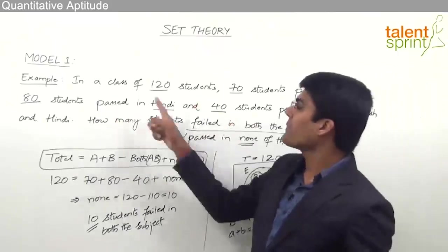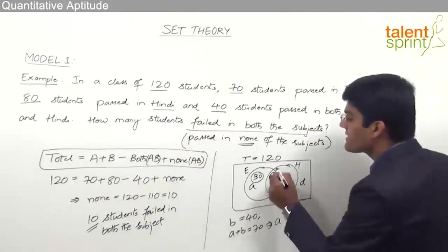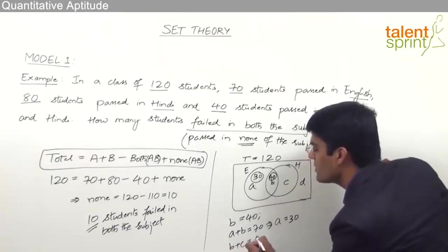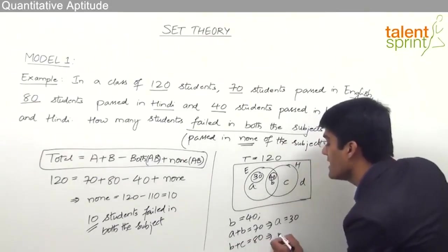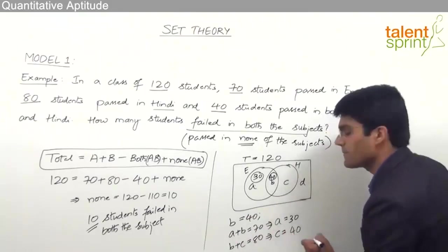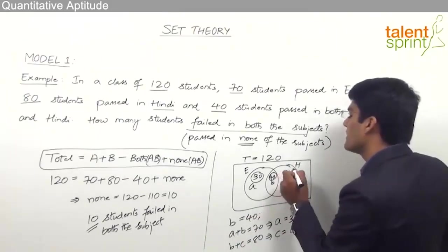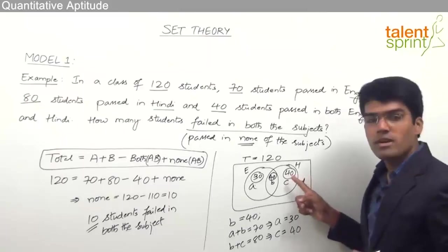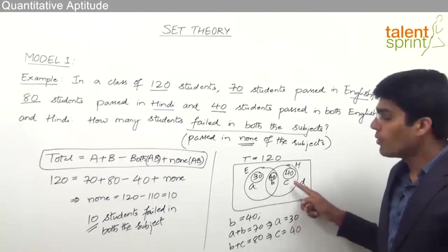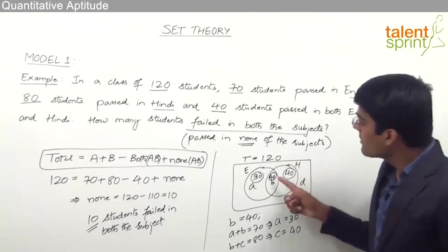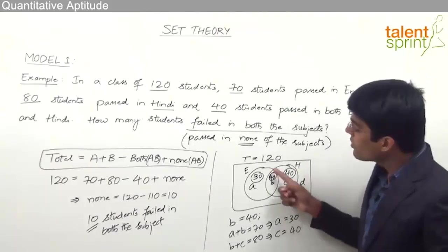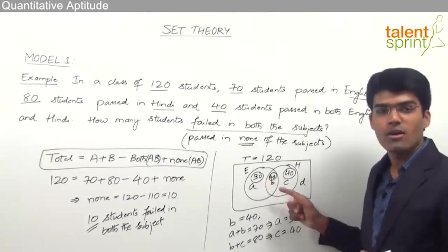Likewise, 80 students passed in Hindi means B plus C equals 80. So C equals 80 minus B, which is 80 minus 40, giving C equals 40. That means 40 students passed only in Hindi. Verification: students passed in Hindi = 40 plus 40 = 80 ✓; students passed in English = 30 plus 40 = 70 ✓; only Hindi = 40; only English = 30.